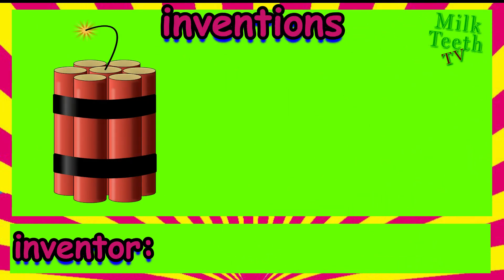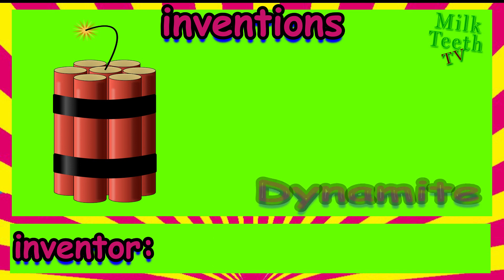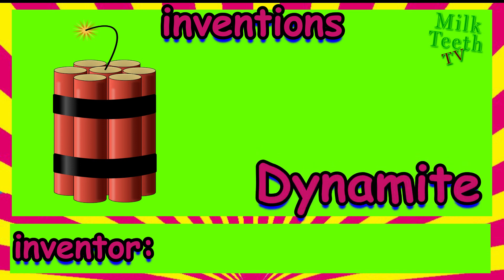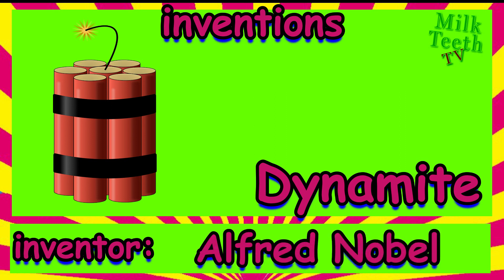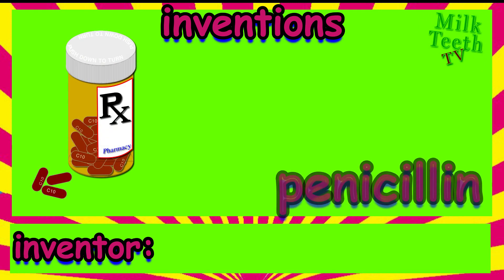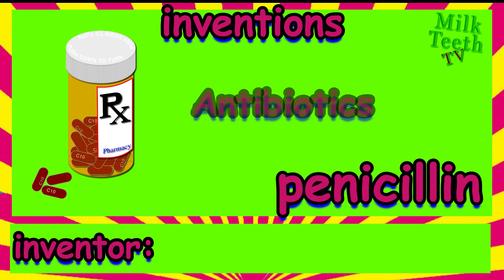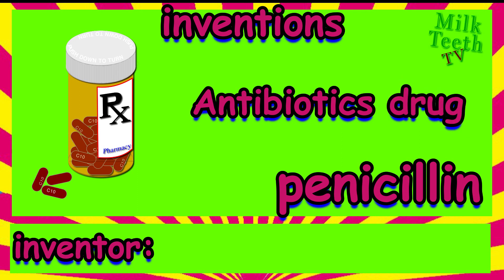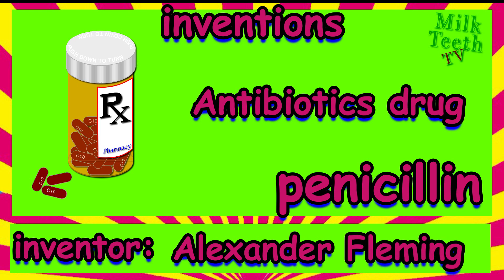This is a very dangerous thing — it is dynamite, a very powerful explosive. It was invented by Alfred Nobel. This is penicillin. It is an antibiotic medicine used to kill bacteria. Whenever you are sick, your mommy gives this to you. It was first invented by Alexander Fleming.